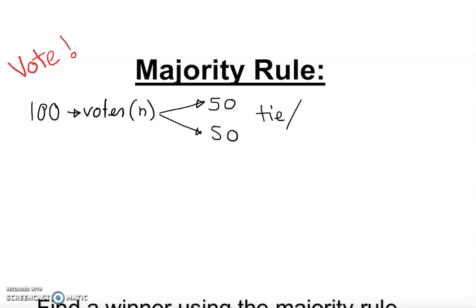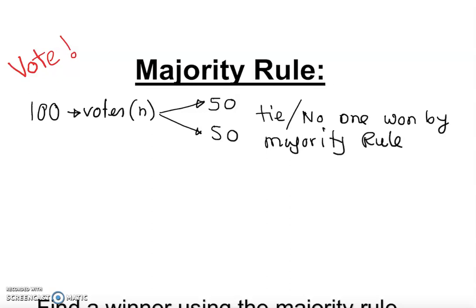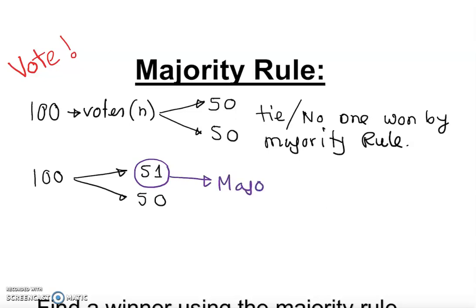With a 50-50 tie, no one wins by majority rule — there is no majority winner. Now if I have 100 votes and one group got 51 and another group got 50, obviously that is my majority winner, because it's more than 50% — it's 51%.